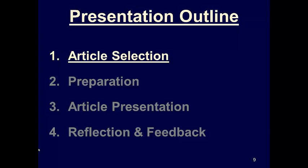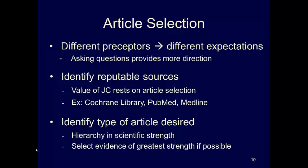Let's start with article selection. Keep in mind that different preceptors will have different expectations, such as one preceptor may prefer an article published within the last 12 months, and another preceptor will prefer a randomized controlled trial article. Asking questions early on and throughout will provide you with direction and more confidence. Identify a reputable source. Remember that the value of a journal club rests on the article selection. Cochrane Library, PodMed, and Medline are a few examples of reputable sources among others.